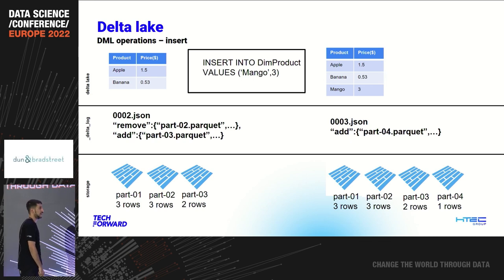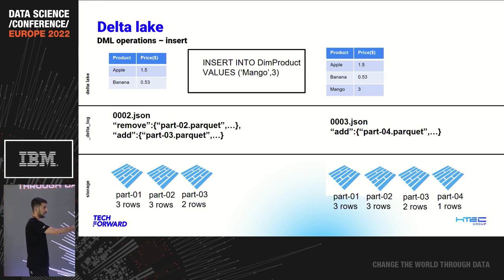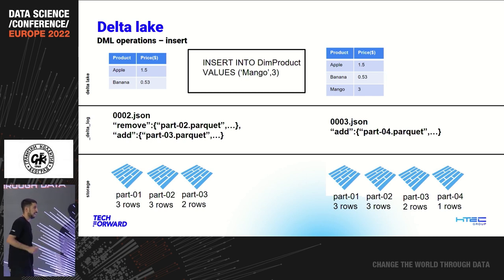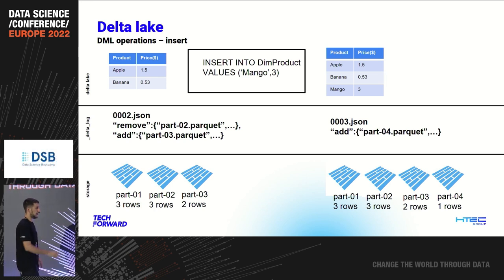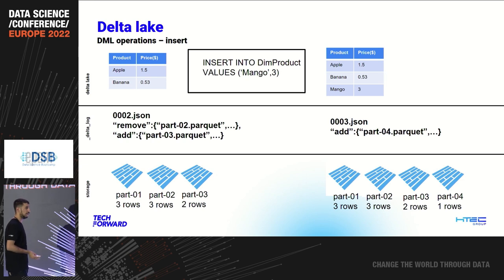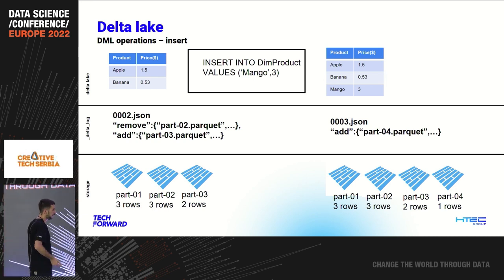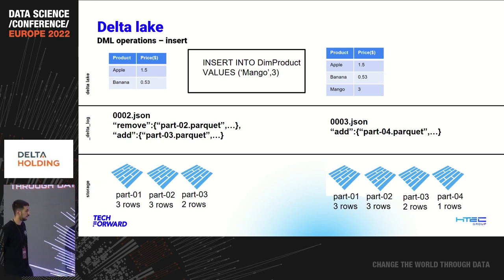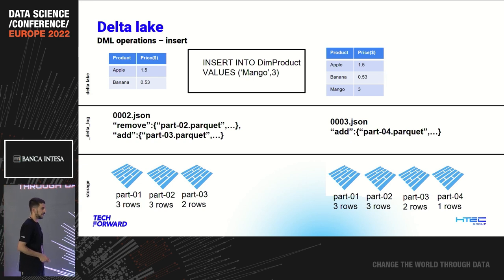For a Delta Lake insert, append is really easy — we are adding a mango, free box, and we add part-04 Parquet. You will see in storage that we added one Parquet file with just one row. Now, simulating the latest state of the table: when we want to read the whole table, it will not look at part-01 or part-02 — it will only look at part-03 and part-04 and return those results. If you go back to the query execution plan, it will read all four JSON files from initial commit to the fourth commit, see that it doesn't need part-01 or part-02, and just take three and four.